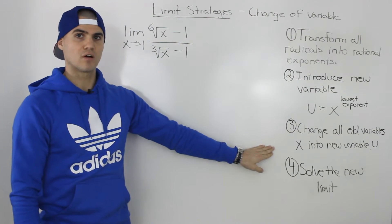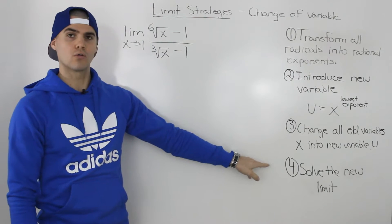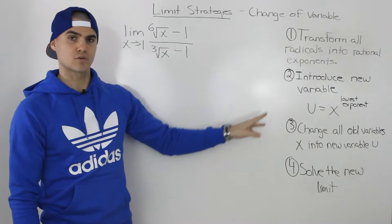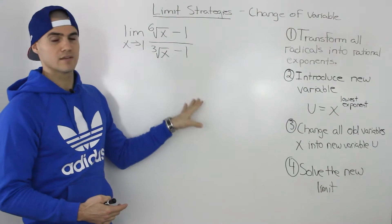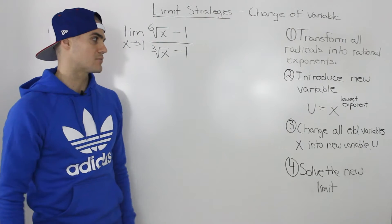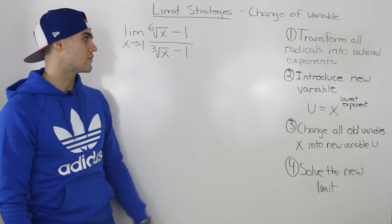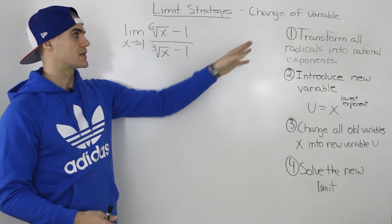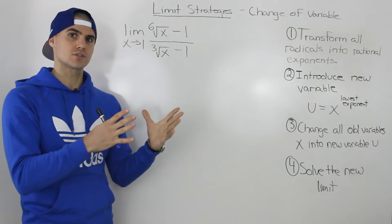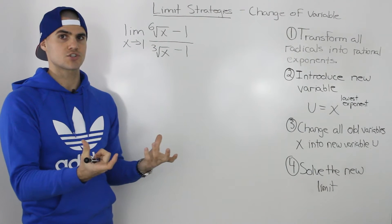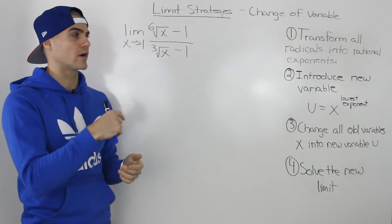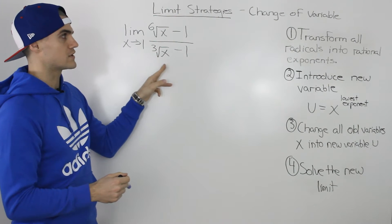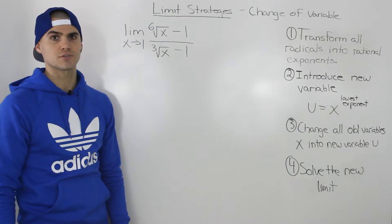I'm going to follow the same steps from the overview video. If you haven't watched that video, I'd suggest doing so first, as I go over these four steps in a lot more detail there. Now, the first step is recognizing that we need the change of variable strategy. Sometimes students confuse it with rationalization — but rationalization is only used with regular square roots. Since we have a sixth root and a third root here, it's clear we're using the change of variable strategy.